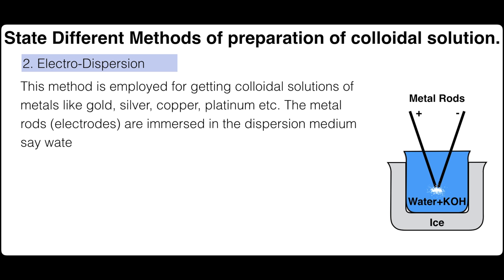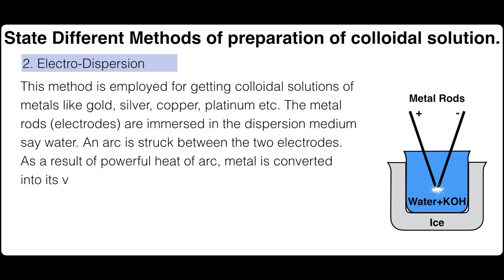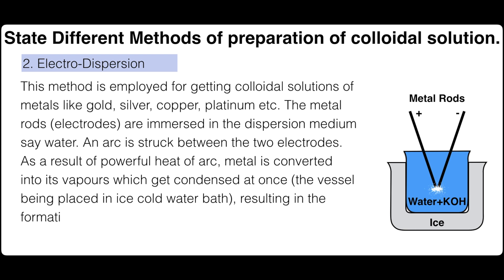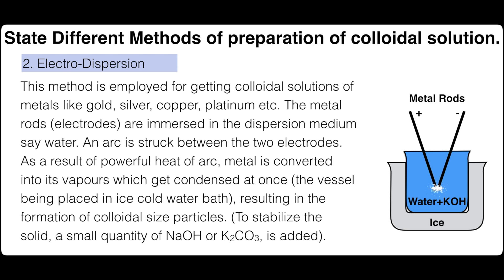The metal rod electrodes are immersed in the dispersion medium, say water. An arc is struck between the two electrodes. As a result of powerful heat of arc, metal is converted into its vapors which get condensed at once, the vessel being placed in ice-cold water bath resulting in the formation of colloidal sized particles.